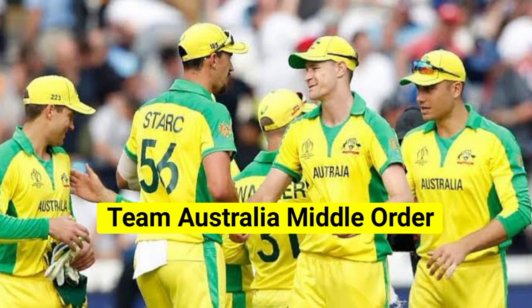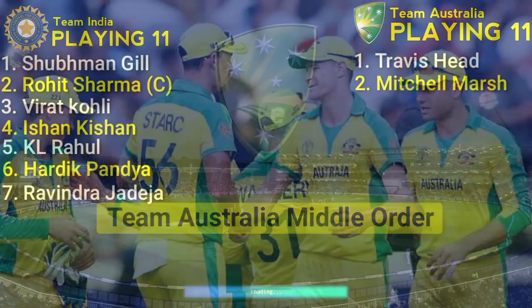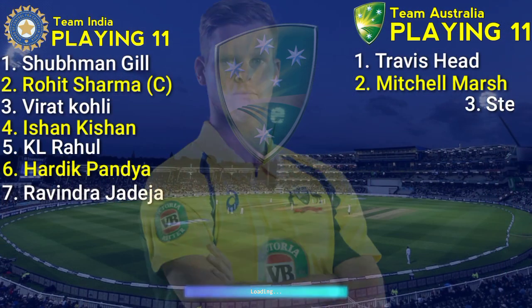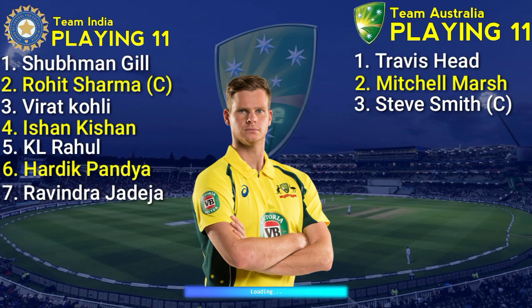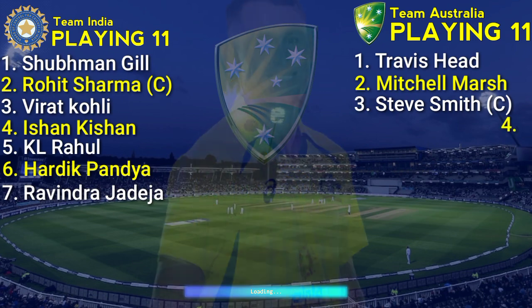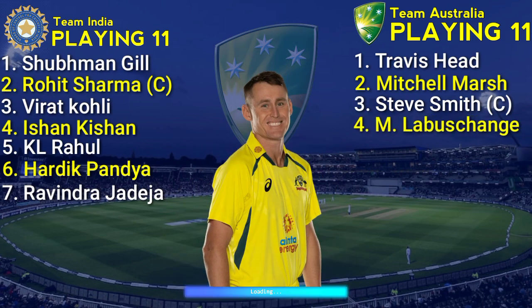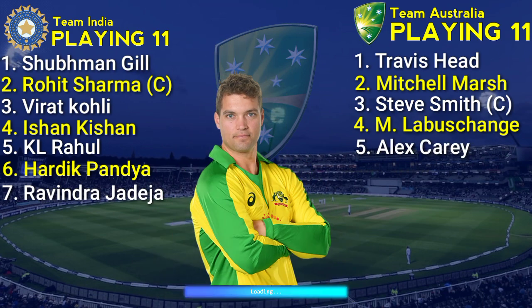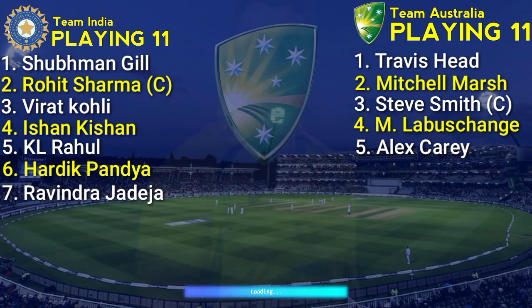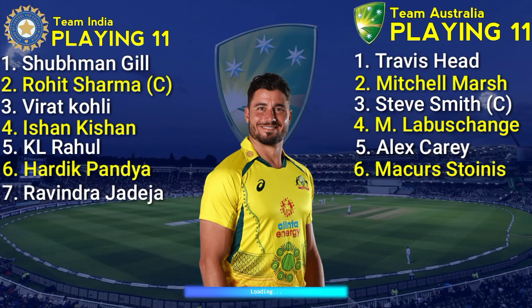Team Australia Middle Order: No.3 Steve Smith, Right Hand Batsman and Captain. No.4 Marnus Labuschagne, Right Hand Batsman. No.5 Alex Carey, Left Hand Batsman. No.6 Marcus Stoinis, Right Hand Allrounder.